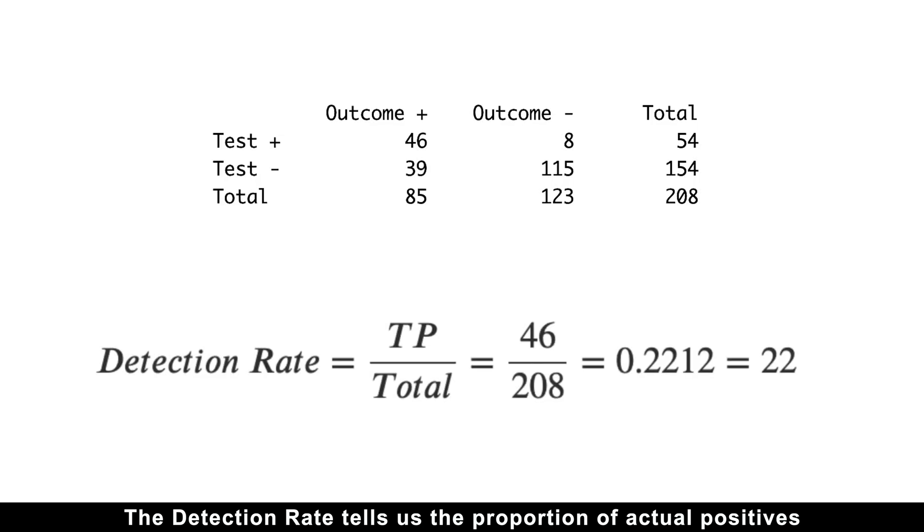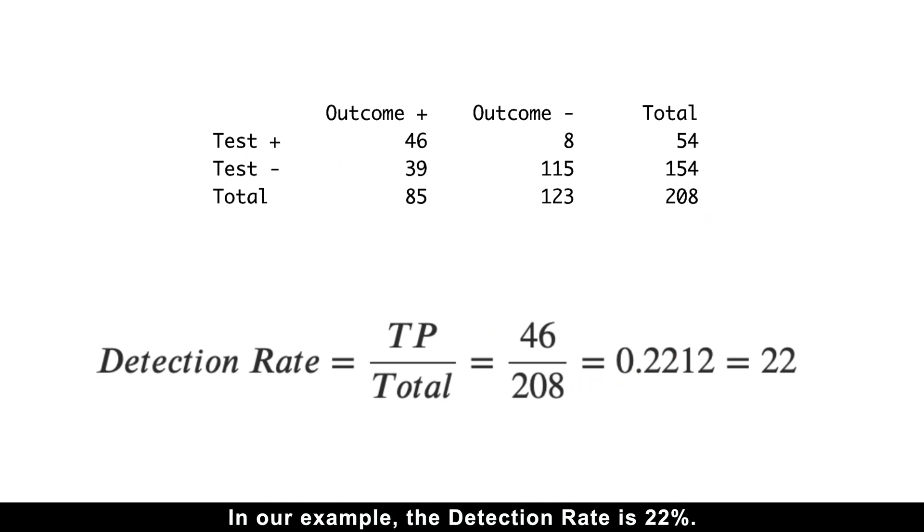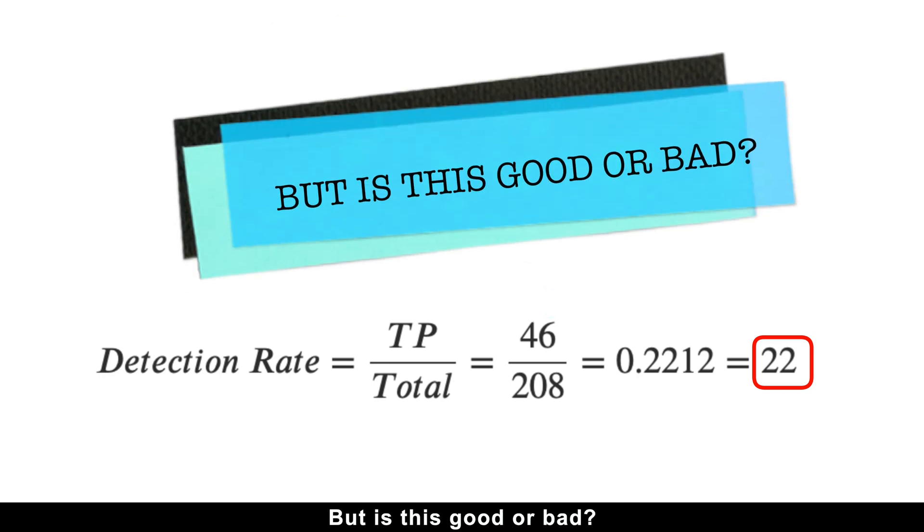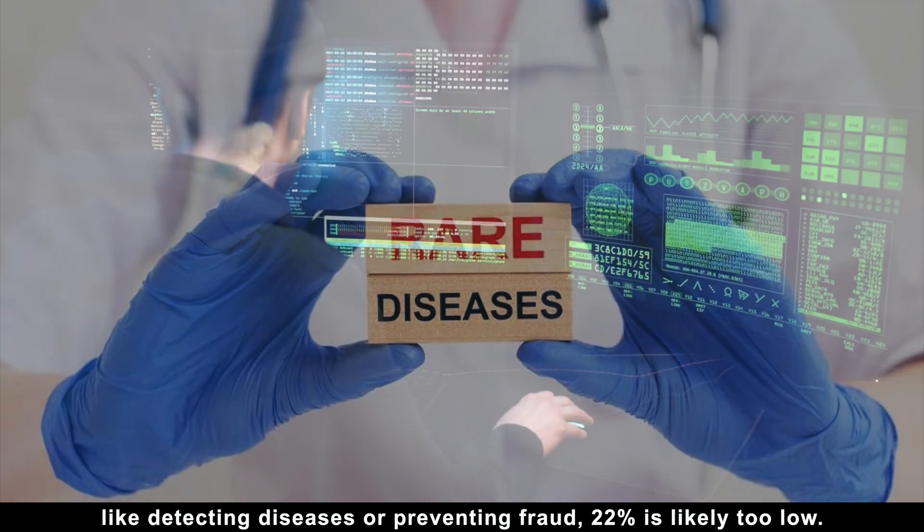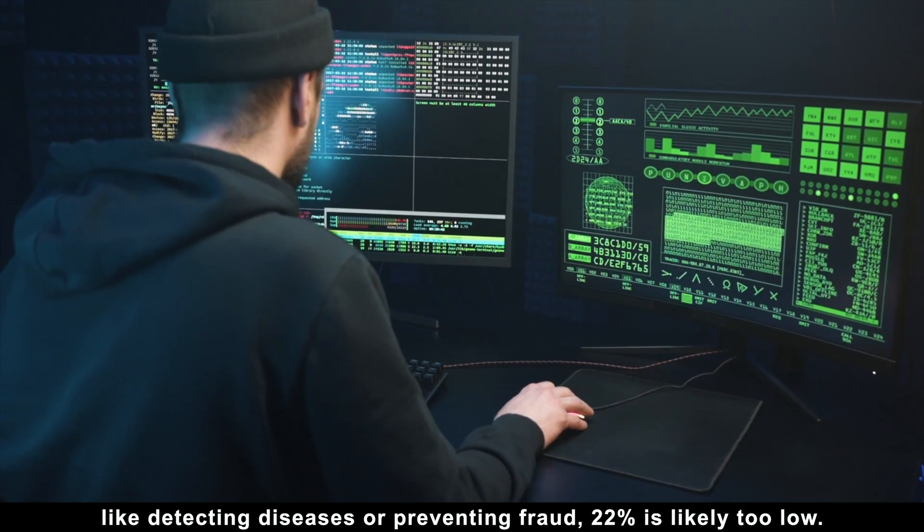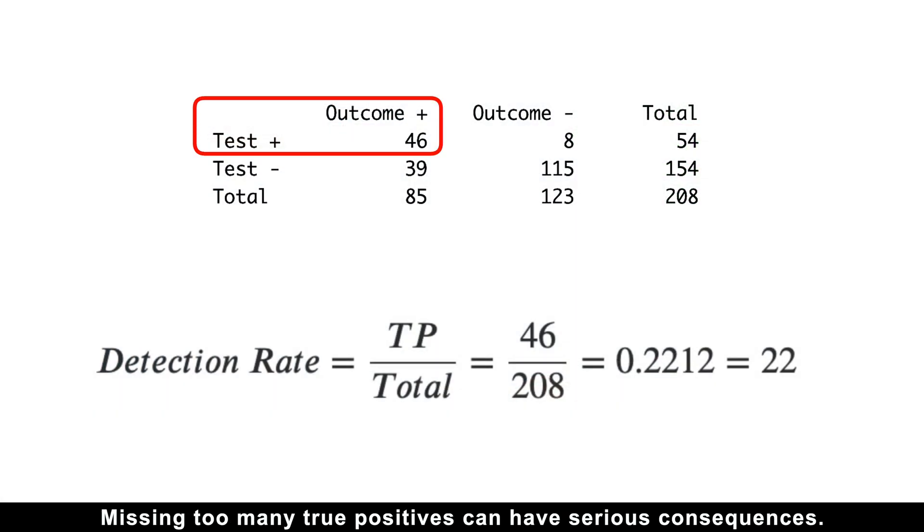The detection rate tells us the proportion of actual positives that the model correctly identified. In our example, the detection rate is 22%. But is this good or bad? It depends on the situation. In high-stakes scenarios, like detecting diseases or preventing fraud, 22% is likely too low. Missing too many true positives can have serious consequences.